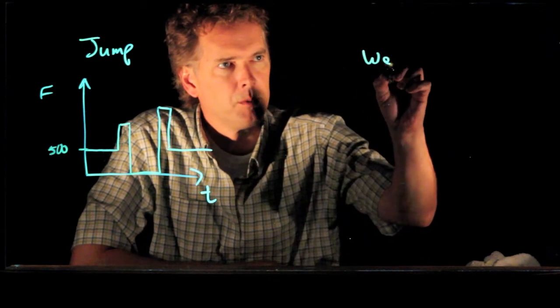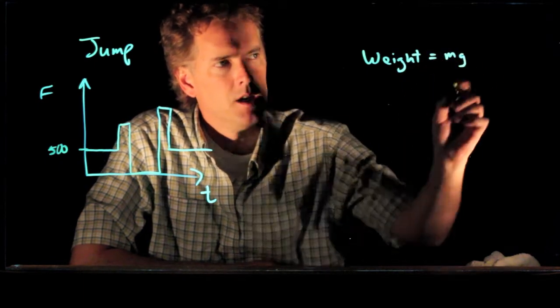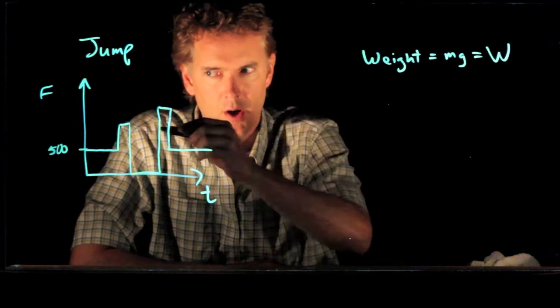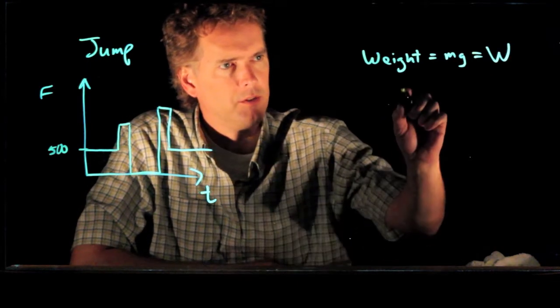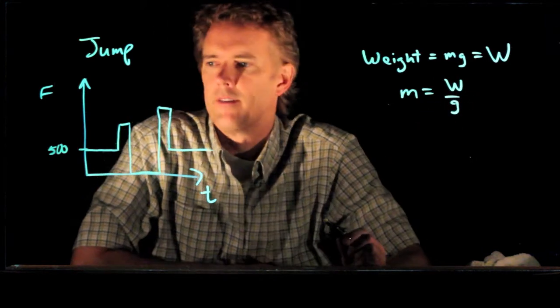So that's the first thing we can understand. The weight is, of course, just equal to mg. Let's call that weight W. And so if we know the weight W, we can solve for the mass. Mass is just their weight over gravity.